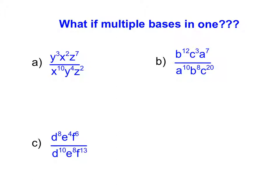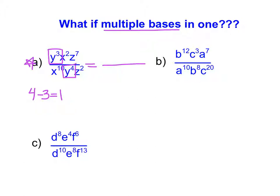Now we're going to expand our knowledge and look at what happens when we have multiple bases in one problem. In part A we have y's, x's, and z's. Essentially all we do is apply this same pattern — we just focus on one base at a time. I'm going to start by focusing on the y's. I notice that I have 3 y's in my numerator and 4 y's in my denominator. So I take 4 minus 3, which leaves me with 1 y, or y to the power of 1. Because the 4 is bigger and in the denominator, my y to the power of 1 is going to go into my denominator.